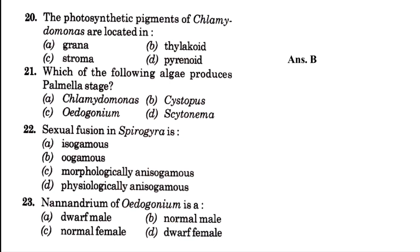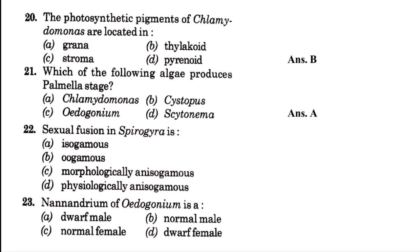Then, which of the following algae produces the palmella stage — Chlamydomonas is called — blank: isogamous, oogamous, morphologically anisogamous, or physiologically anisogamous. The answer is option D, that is physiologically anisogamous.